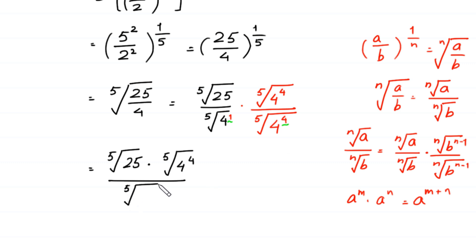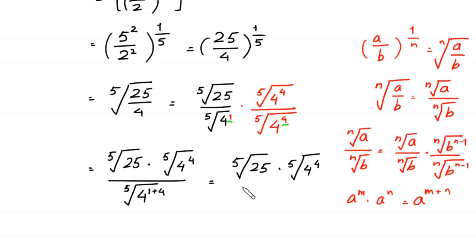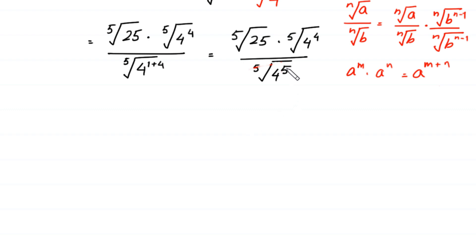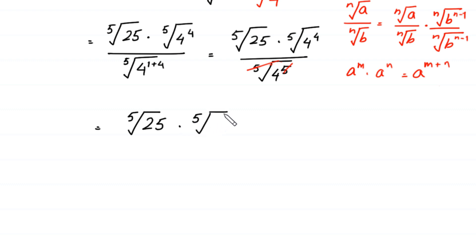We get the 5th root of 25 times the 5th root of 4 to the power 4, all divided by the 5th root of 4 to the power 5. The power 5 will be cancelled by this 5th root, leaving us with the 5th root of 25 times the 5th root of 4 to the power 4, divided by 4.